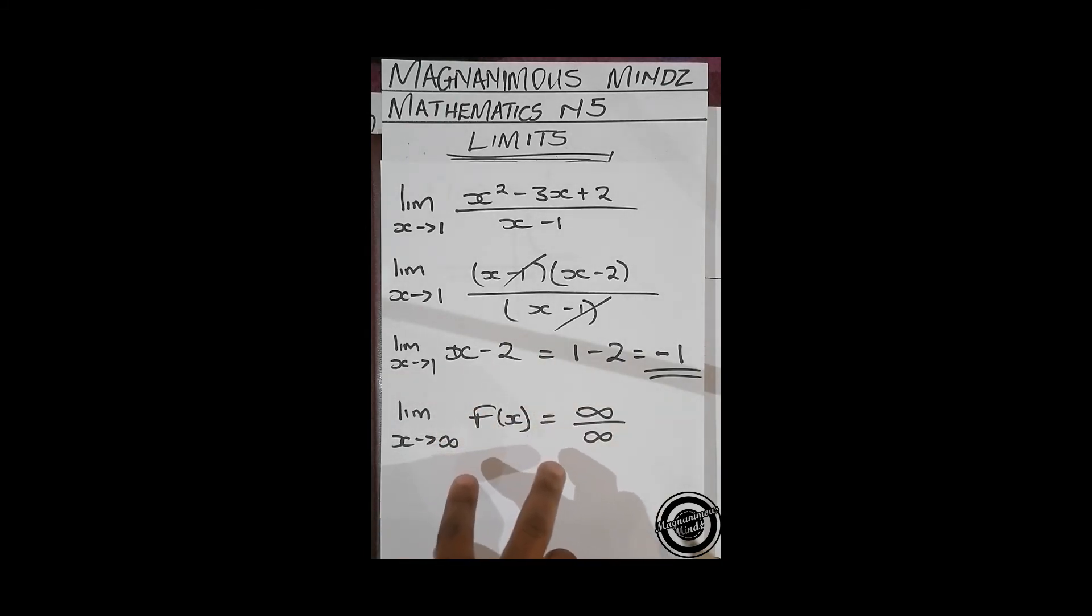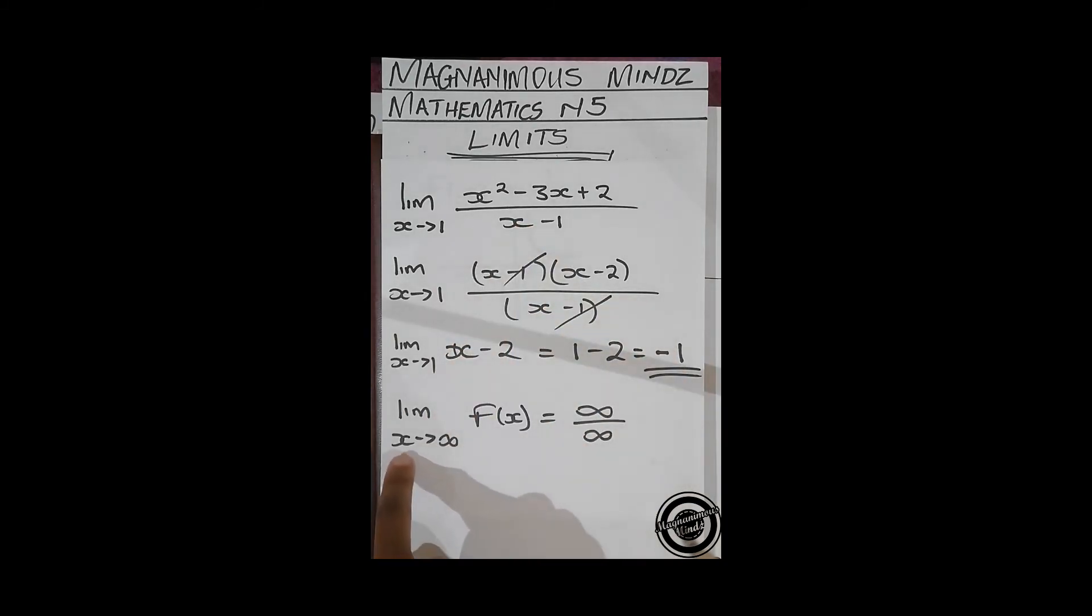Then there are some cases whereby lim x approaching 0, f(x) gives us 0/0. In this case we use a rule which is called L'Hôpital's rule.